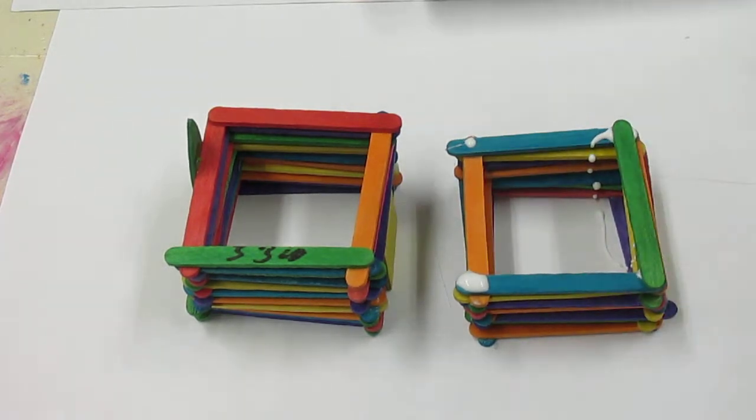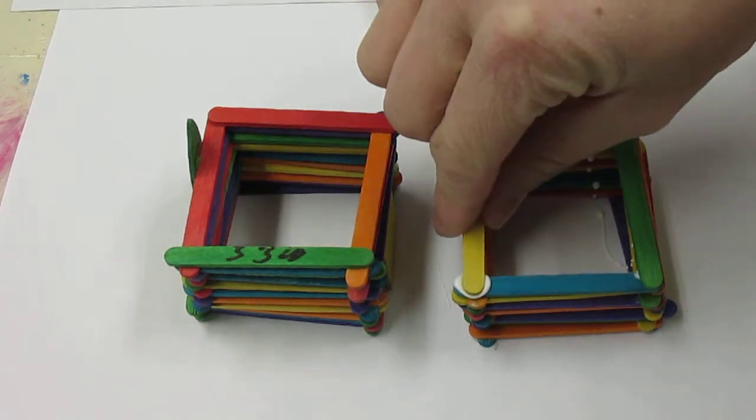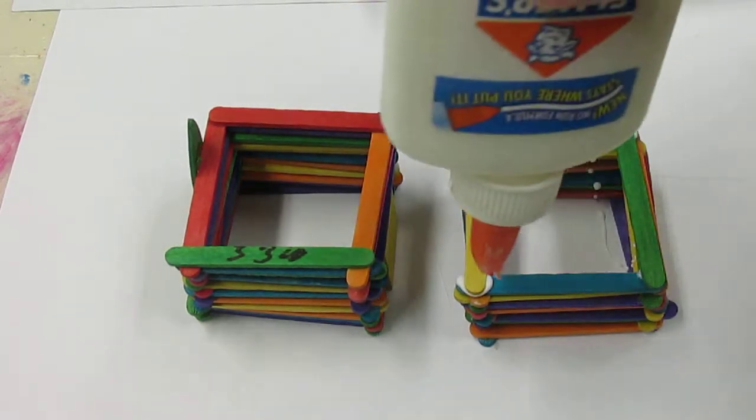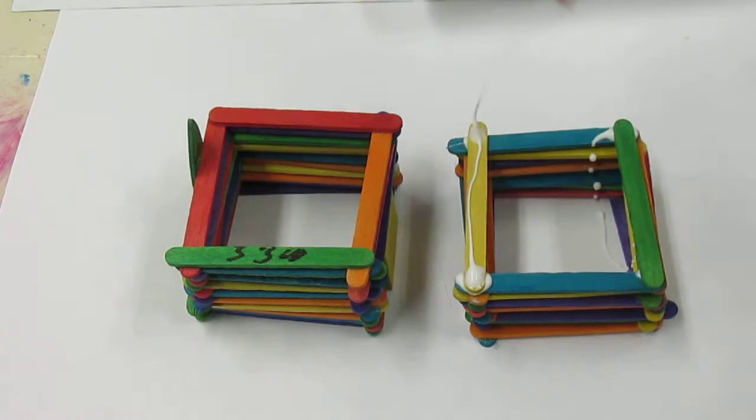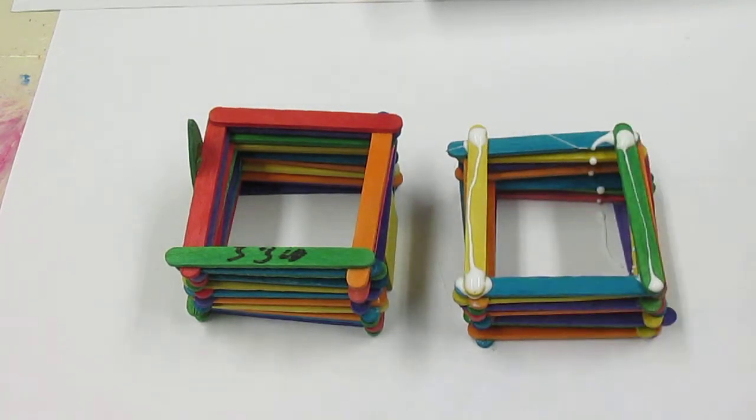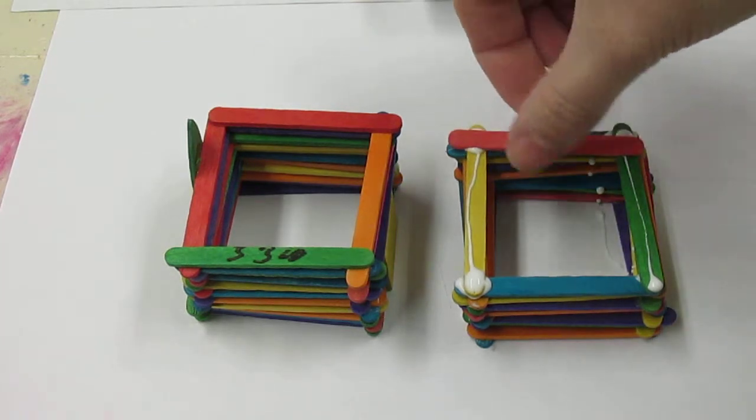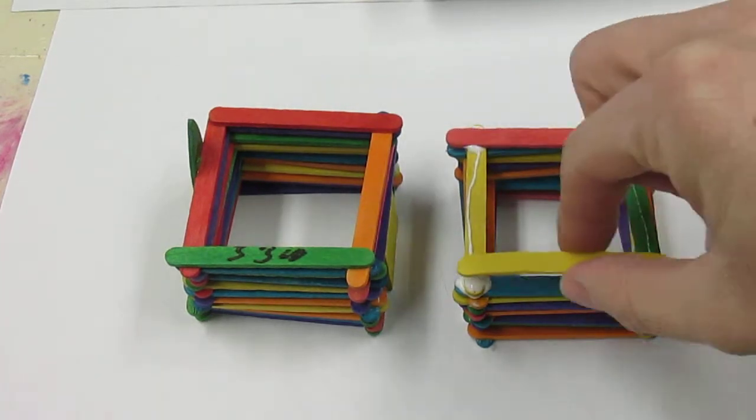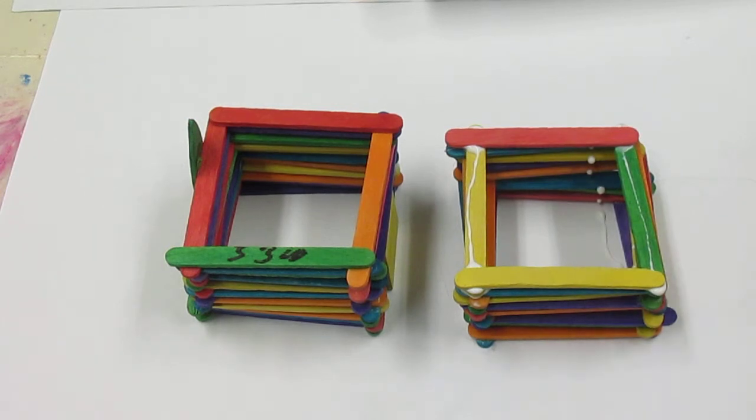So you're going to have top, bottom, side, side, and then I would need my four glue dots again: one, two, three, four. And because this was side, side, my next round is top and bottom. Now once I have my walls built up to the height I want, I have two more things to do to finish my house.